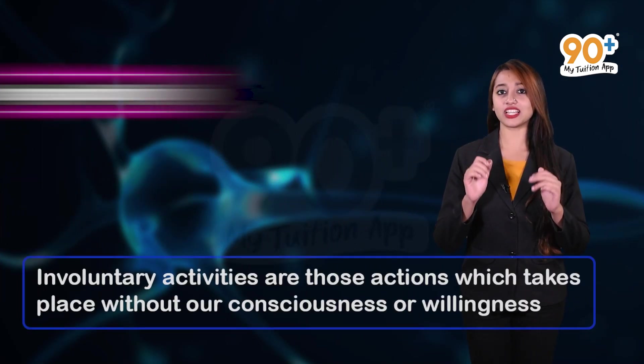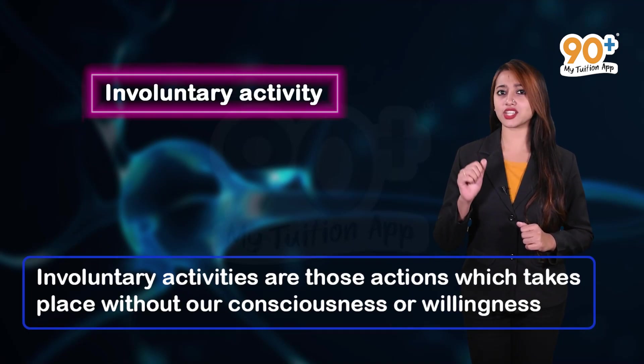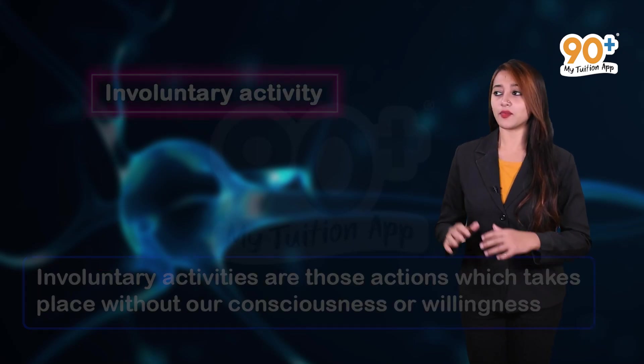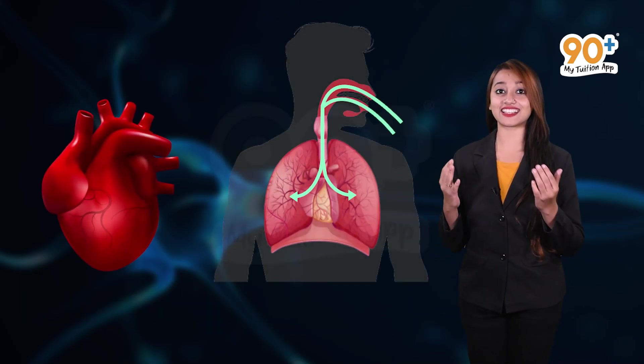And while the involuntary activities are those actions that happen without our consciousness or willingness and they are like heartbeat, breathing, etc. As we have seen, all these activities are controlled and coordinated by the nervous system. You could guess how important this nervous system is, isn't it?